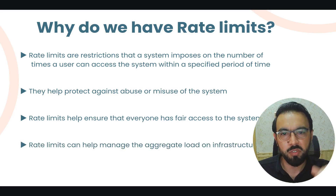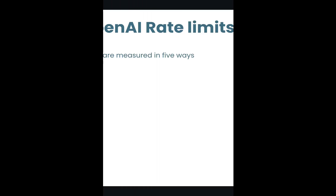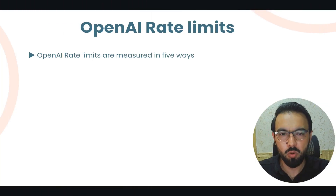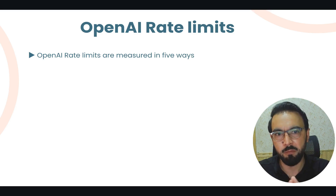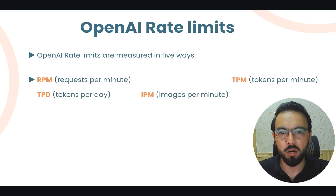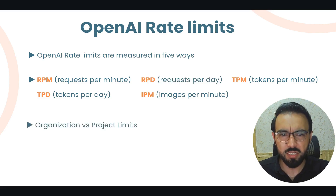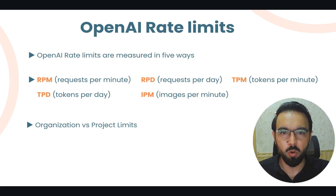Now, what are some rate limits on the OpenAI API? The OpenAI API has put rate limits in five different ways: requests per minute, tokens per minute, requests per day, tokens per day, and images per minute.